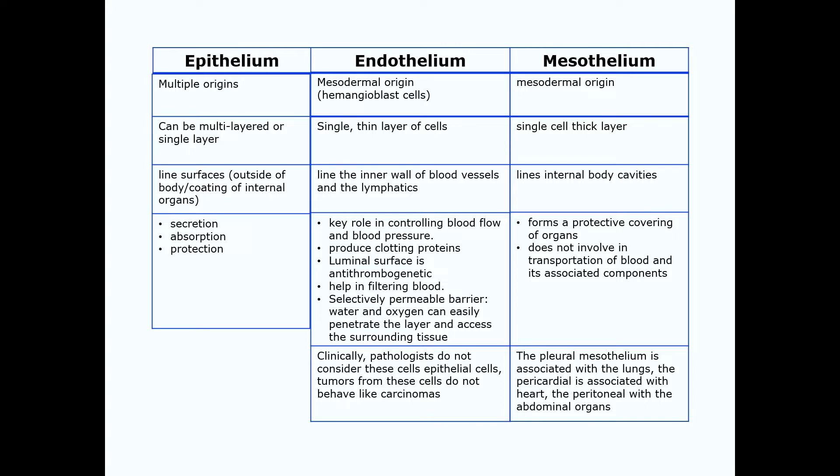Finally, we have mesothelium, which is also of mesodermal origin and is a single cell layer. Mesothelium lines internal body cavities. Its function appears to be protective, as these cells secrete a lubricating fluid. Thus, one sees mesothelium on external surfaces of organs that need to be slippery, since changes in size, shape, and movement are integral to their functions — organs such as the lungs, heart, and abdominal organs. We'll touch on these differences again as we discuss the heart and the vessels.